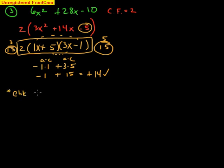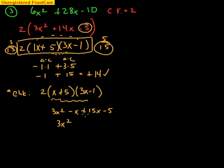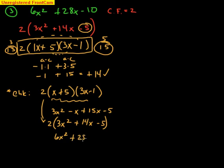Let's check by FOILing, handling the 2 out front by ignoring it first. x times 3x is 3x squared. x times negative 1 is negative x. 5 times 3x is positive 15x. 5 times negative 1 is negative 5. Combining the middle terms: negative x plus 15x is positive 14x. So we have 3x squared plus 14x minus 5. Now bring back the 2 in front of a parenthesis and multiply everything by 2: 6x squared plus 28x minus 10 — exactly what we started with.